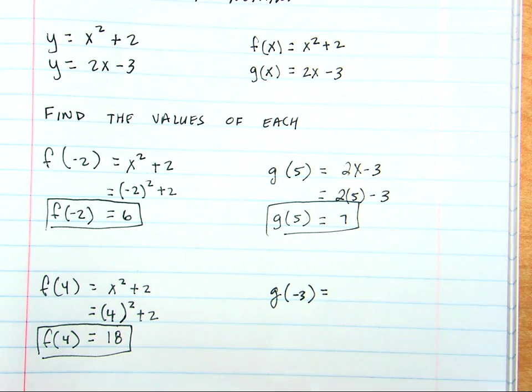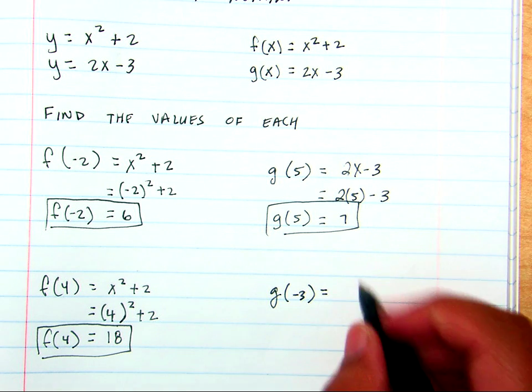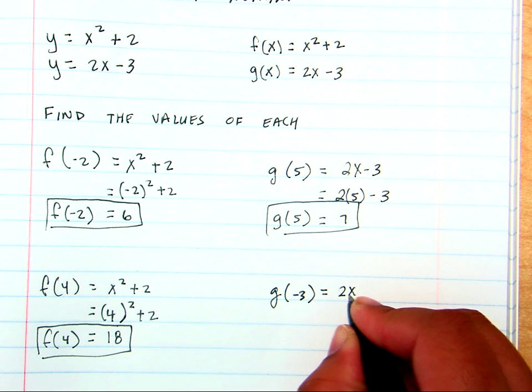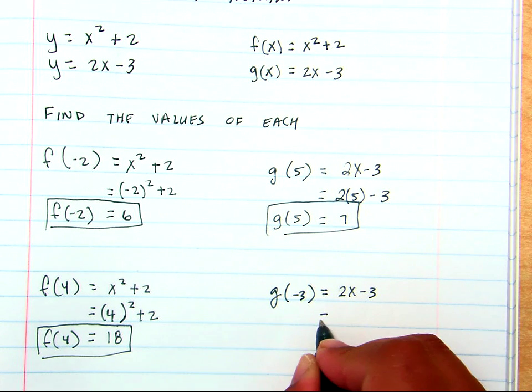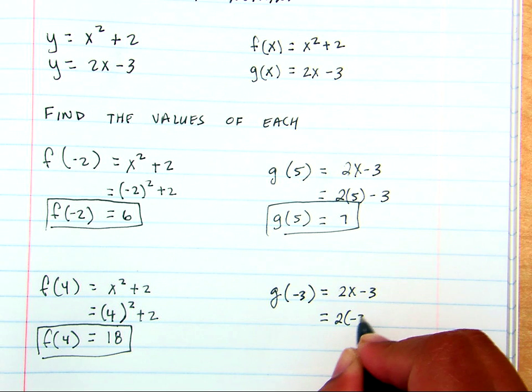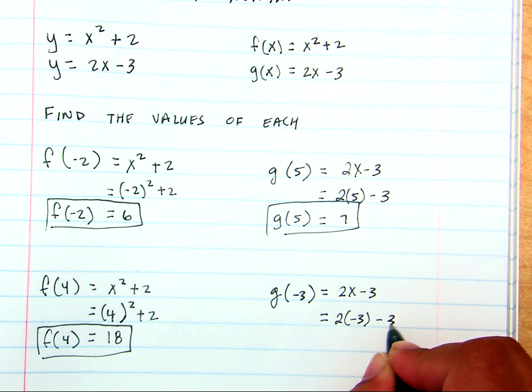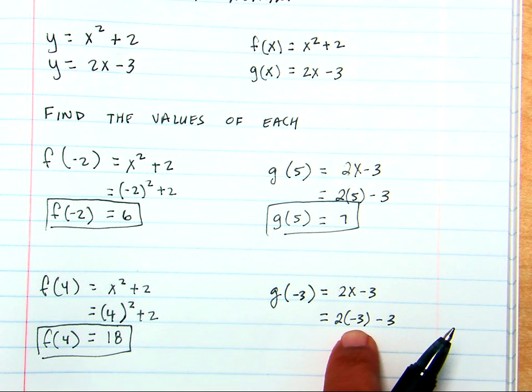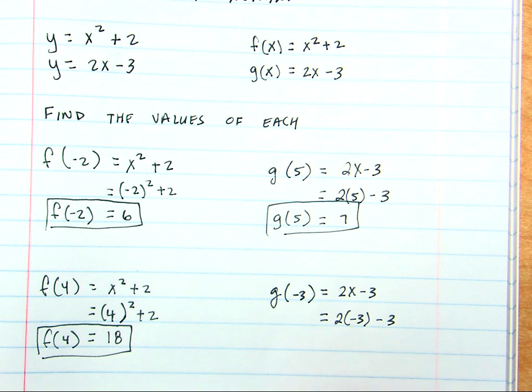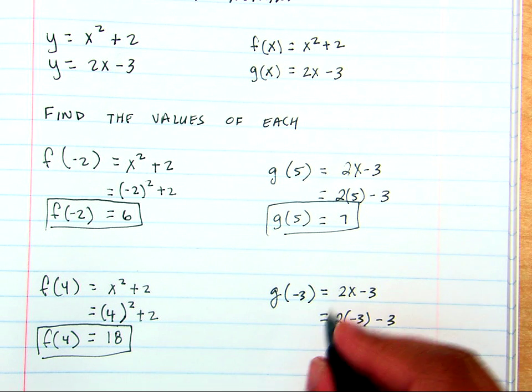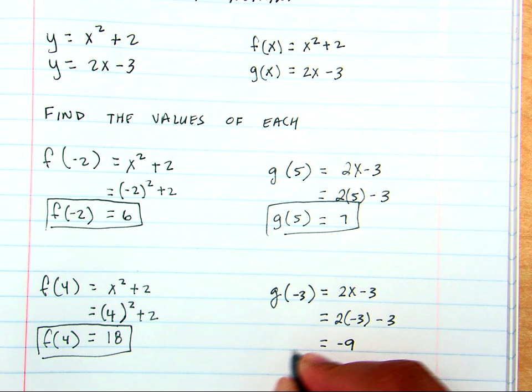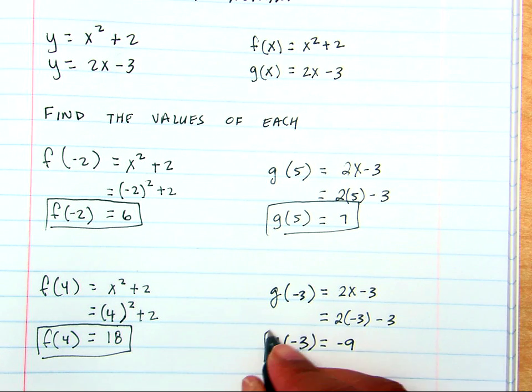And our last one was g of negative 3. Well, g was 2x minus 3. We'll plug in the negative 3 where the x was. 2 times negative 3 is negative 6. Negative 6 minus 3 is negative 9.